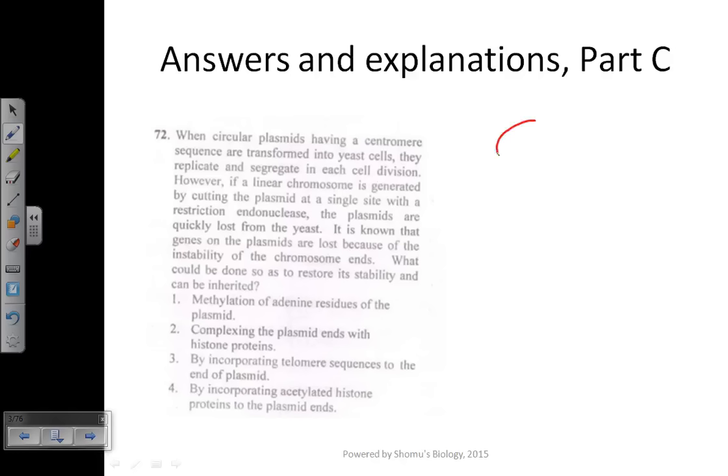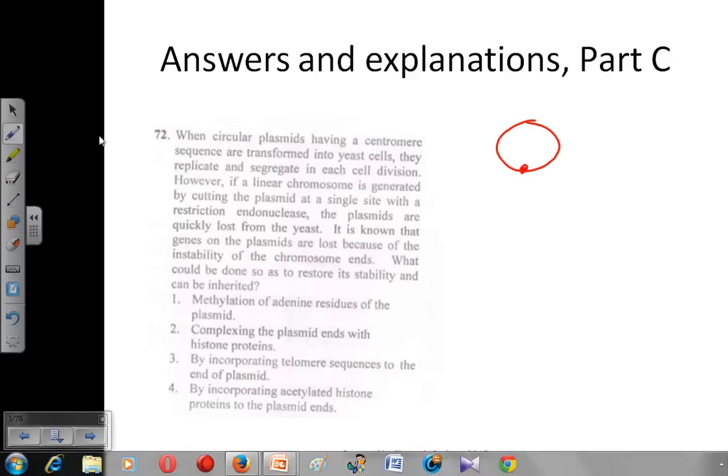The circular plasmid has a centromere at a particular point. In yeast cells, these circular plasmids work completely fine. Let's say this is the yeast cell and there is a circular plasmid. If we break this circular plasmid at a single location, the plasmid becomes linear with the centromere in the middle. But those plasmids are degraded.